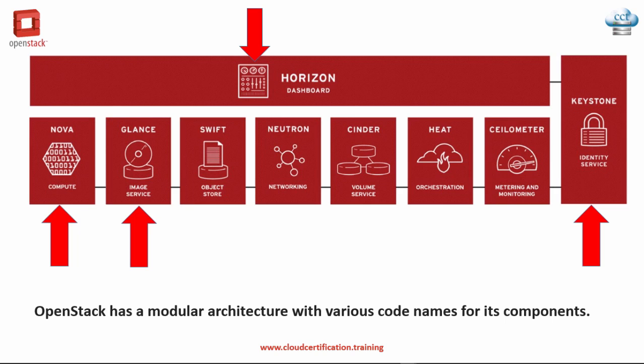Next up we're going to talk about OpenStack Image, which is Glance. It provides discovery, registration, and delivery services for disk and server images. Stored images can be used as a template and can also be used to store and catalogue an unlimited number of backups. The image service can store disk and server images in a variety of backends, including Swift.